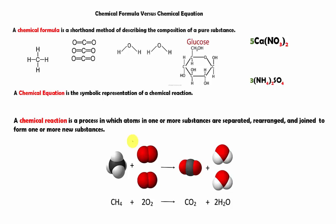In the previous lesson, we learned how to interpret chemical formulas. In a chemical formula, we have a number in front called the coefficient. Within a chemical formula, we have different elements, and sometimes an element is described by a subscript. The subscript indicates how many of that element there are. We also have parentheses that group a specific type of polyatomic ions, and the number outside indicates how many of those polyatomic ions there are.